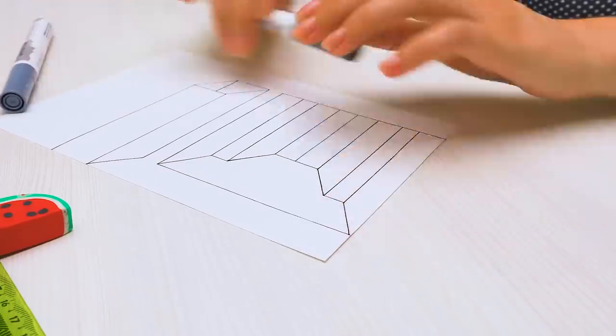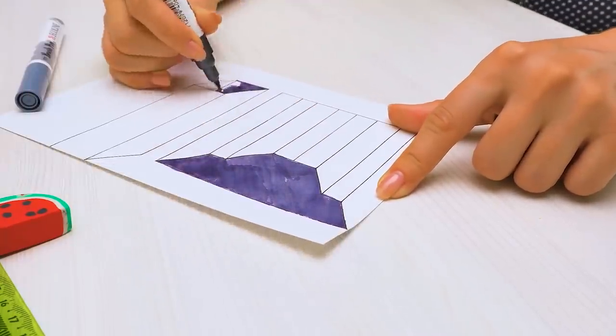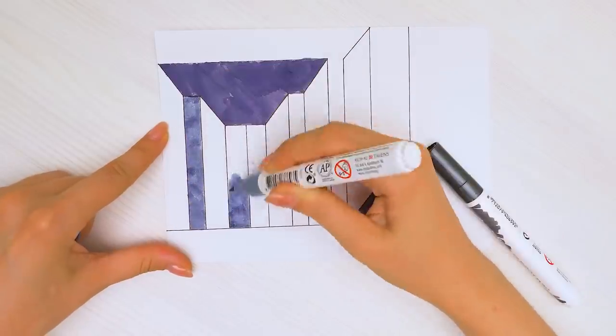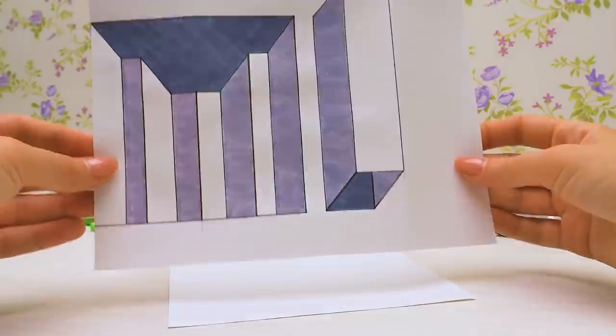Now we can start coloring. First I'll color two parts with a black marker, and I'll color the rest with gray. And our drawing is ready!